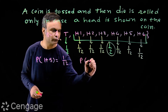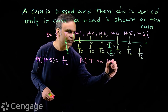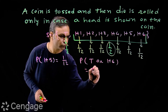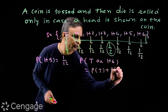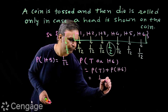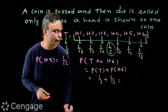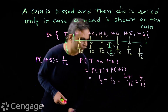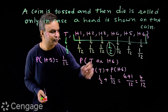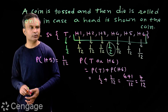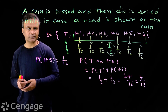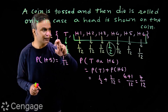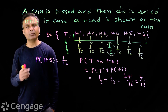Then what is the probability of T or H6 — either tail or 6 on a die? This is equal to probability of tail plus probability of H6, which is half plus 1 upon 12, equal to 6 plus 1 upon 12, equal to 7 upon 12. So we can create many different events and find their probabilities using this probability assignment.